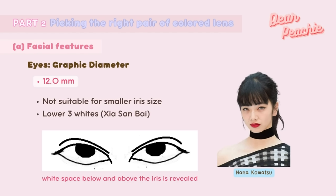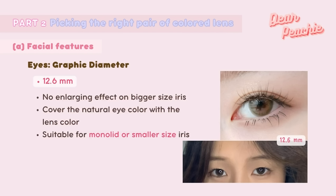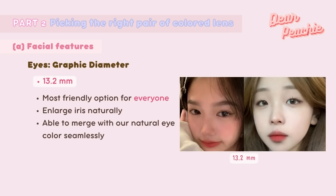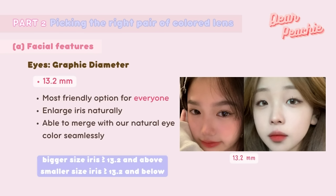At 12.6 mm, there is no enlarging effect on bigger irises — it only covers the natural eye color — but it is a great option for those with monolid or smaller iris. At 12.9 mm, it adds shine to bigger irises, and for smaller iris beauties it offers a very natural enlarging effect, looking great in real life as it resembles your real eyes — perfect for daily wear to work or school. At 13.2 mm, this is the most universally flattering graphic diameter. It naturally enlarges the iris for all sizes, and the lens color merges seamlessly with your natural eye color.